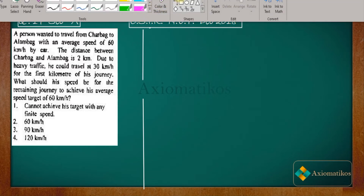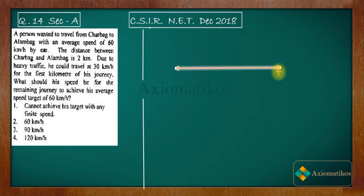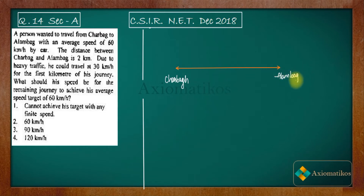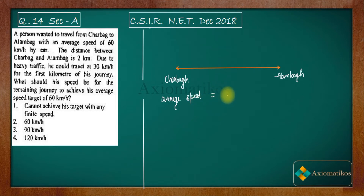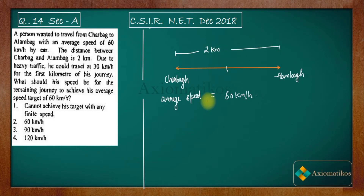So let us say this is your road. This point is Charbagh and this point is Alambagh. A person is moving in a car from Charbagh toward Alambagh. The total distance is 2 km, and this point in the middle is the midpoint — so from Charbagh to the midpoint it is 1 km, and from the midpoint to Alambagh it is also 1 km.